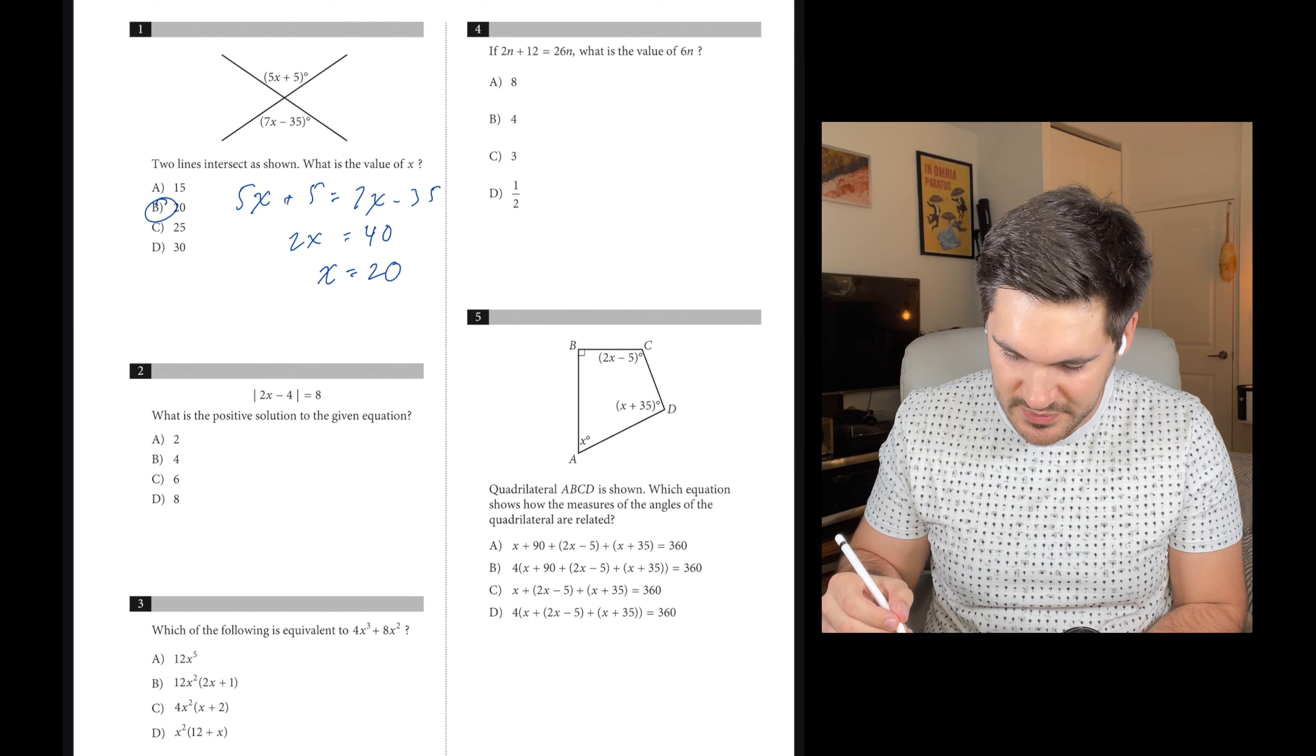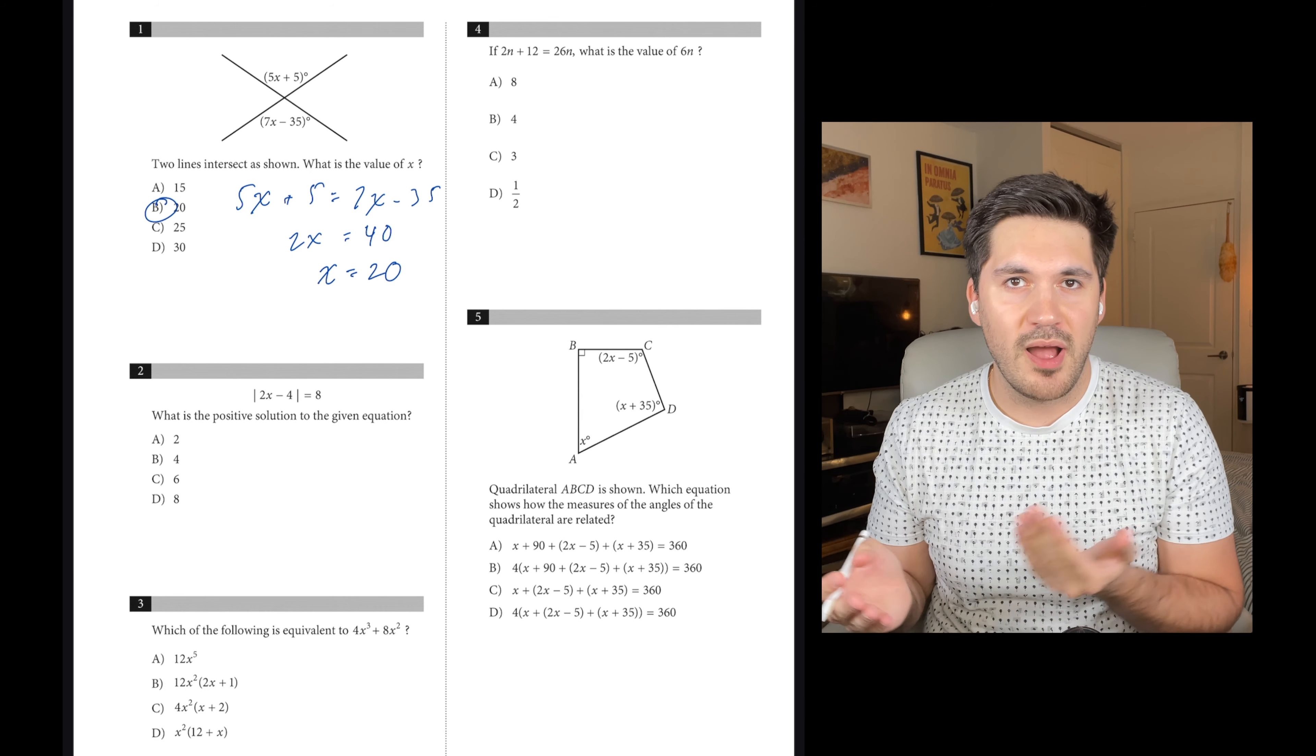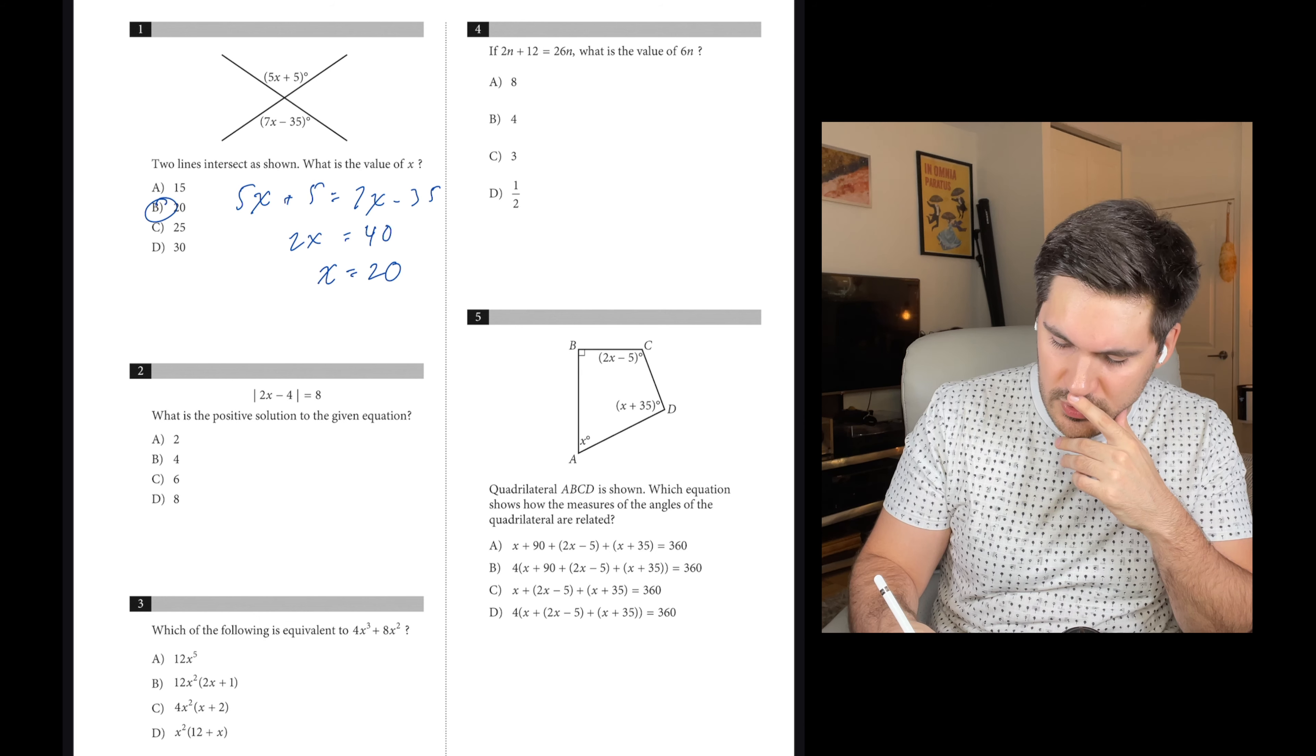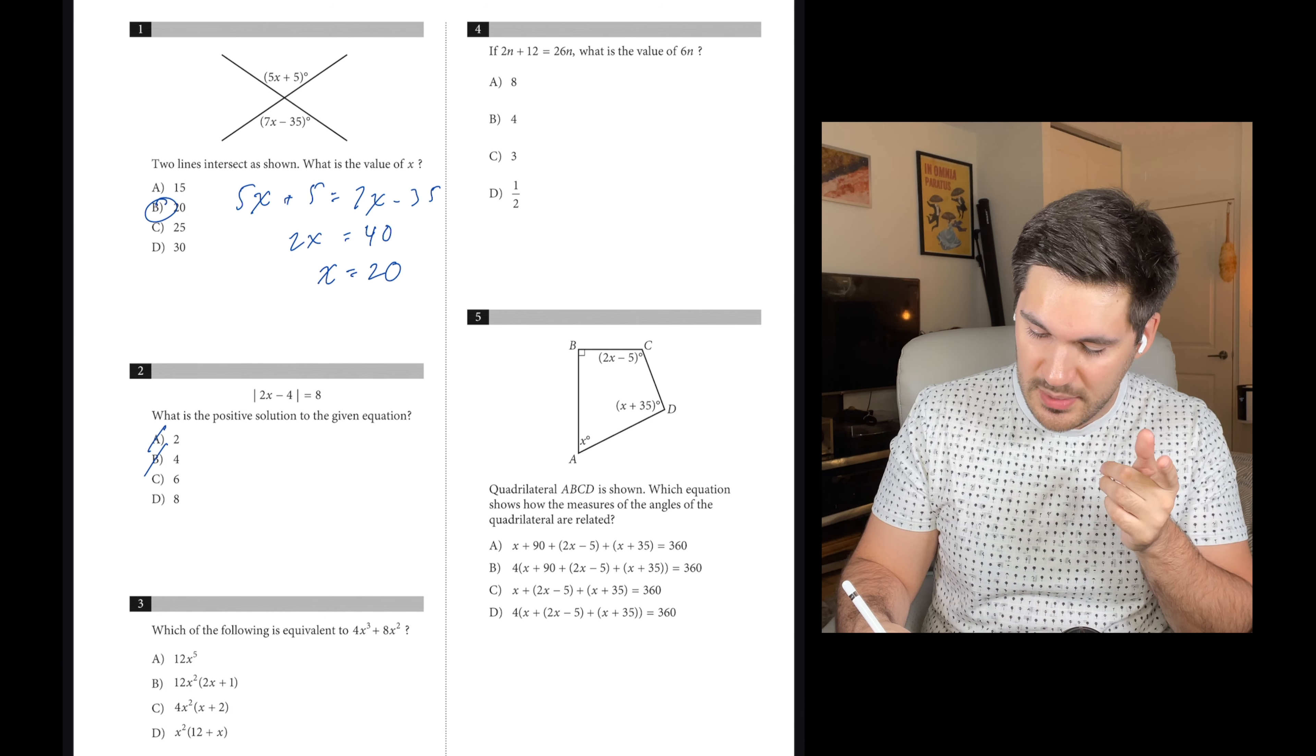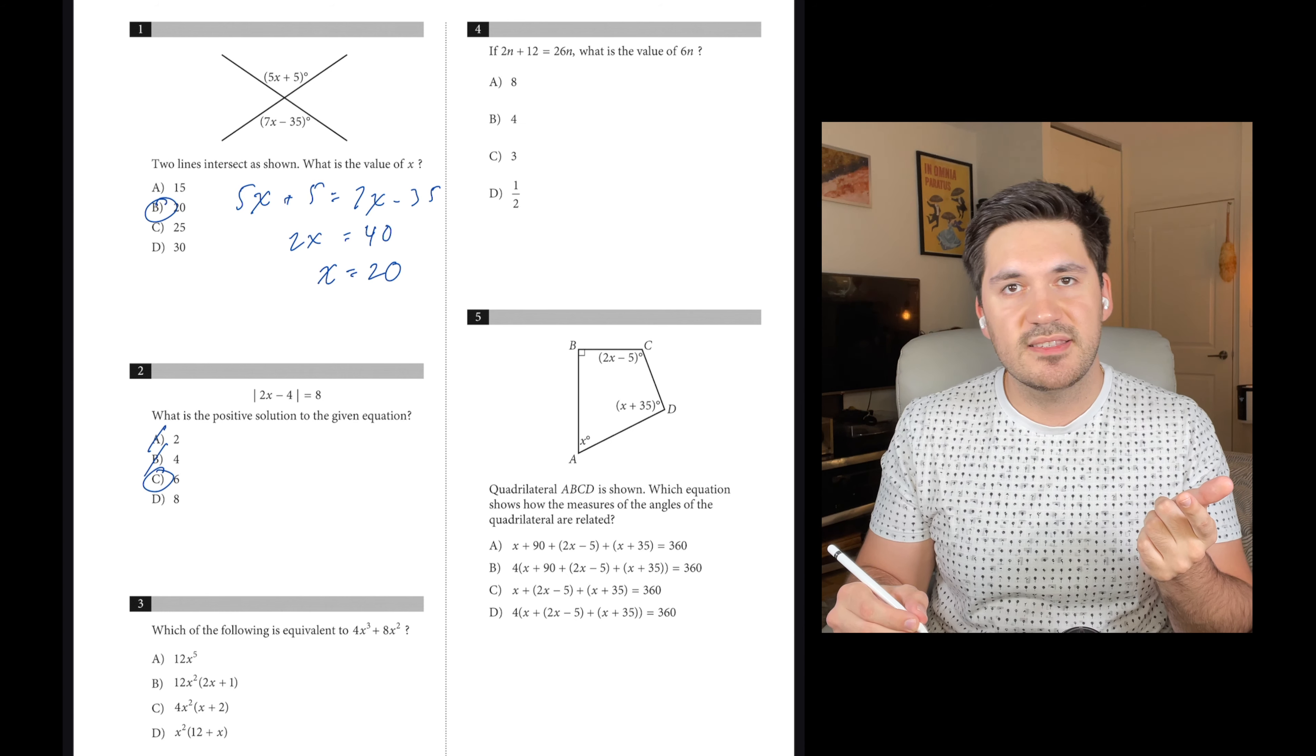Number two, what is the positive solution to the given equation? We could solve this algebraically, but it looks easy enough that we can just plug the answer choices in. So 2 and 4 look too small. I'm going to plug in 6. We get 2 times 6 minus 4, which gives us 8. The absolute value of 8 is 8, so C works.